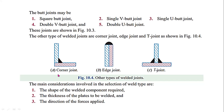Other types of welded joints shown in the figure are corner joint, edge joint, and T-joint. The main considerations in selecting a weld type are the shape of the welded component required, the thickness of the plates to be welded, and the direction of the forces applied.